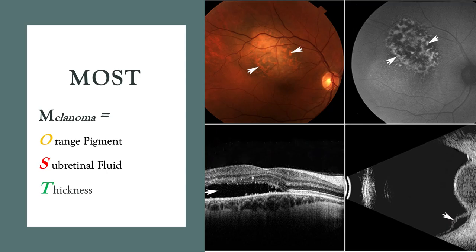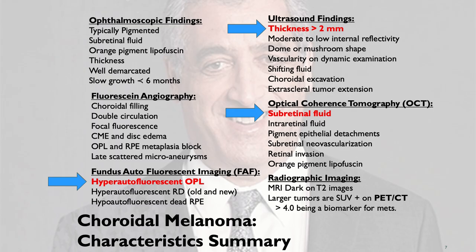So, all together, we have the mnemonic MOST, where melanoma equals orange pigment, subretinal fluid, and thickness of two or more millimeters. This definitely is a choroidal melanoma. However, it's just not that simple. Not all tumors look classic, but the mnemonic is still helpful, since most tumors will show you those findings.